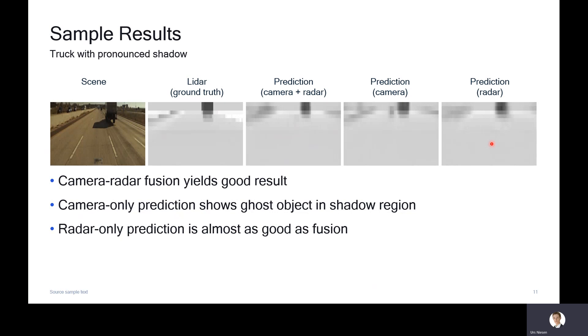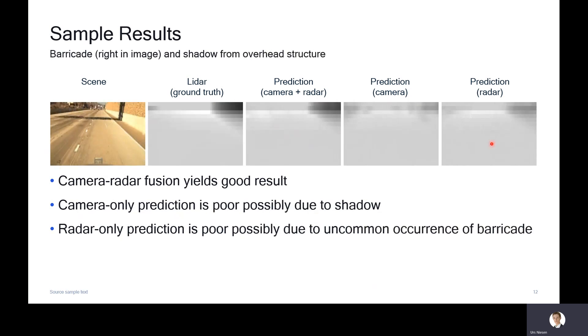We've seen one example where the fusion was as good as the camera and the radar was not so good. We've seen a second example where the fusion was as good as the radar and the camera was not so good. The next example is one where the fusion is better than each sensor individually. Here's the scene: we have a barricade on the right and a shadow from an overhead structure. The camera radar fusion yields a good prediction. The camera only prediction is quite poor, and we conjecture this is due to the shadow. The radar only prediction is also quite poor, and we conjecture this is due to the uncommon occurrence of this barricade.